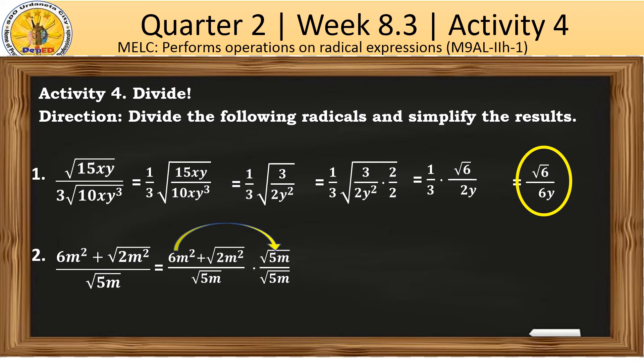Since our numerator has two terms, when we perform the multiplication here, we need to apply the distributive property. That means you will multiply 6m squared by the square root of 5m and then the square root of 2m squared by the square root of 5m. That will become 6m squared square root of 5m plus the square root of 10m to the 3rd all over 5m.